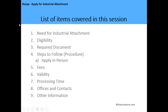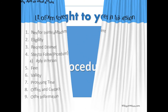The list of items we are going to cover in this session includes: the need for industrial attachments, the eligibility criteria, the required documents, steps to follow in making the application, the fees, validity period, processing time, office location and contact information, and any other relevant information on how you can make your application for industrial attachment in Kenya.